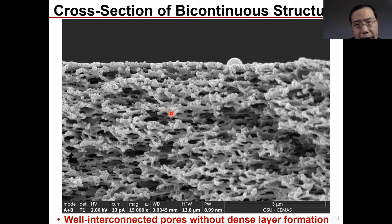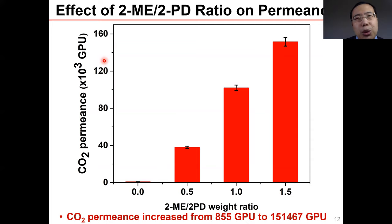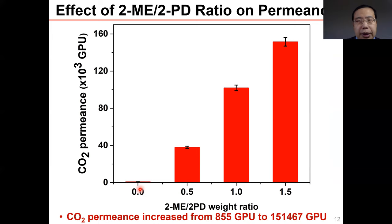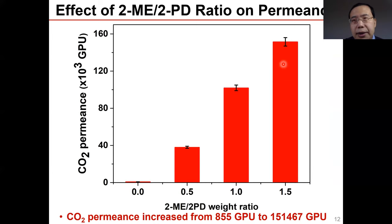Here we show the effects of 2ME-to-2PD ratio on CO2 permeance. When there is no 2ME, CO2 permeance is very low, only 855 GPU. As the ratio increases to 1.5, the CO2 permeance reaches as high as 151,000 GPU.